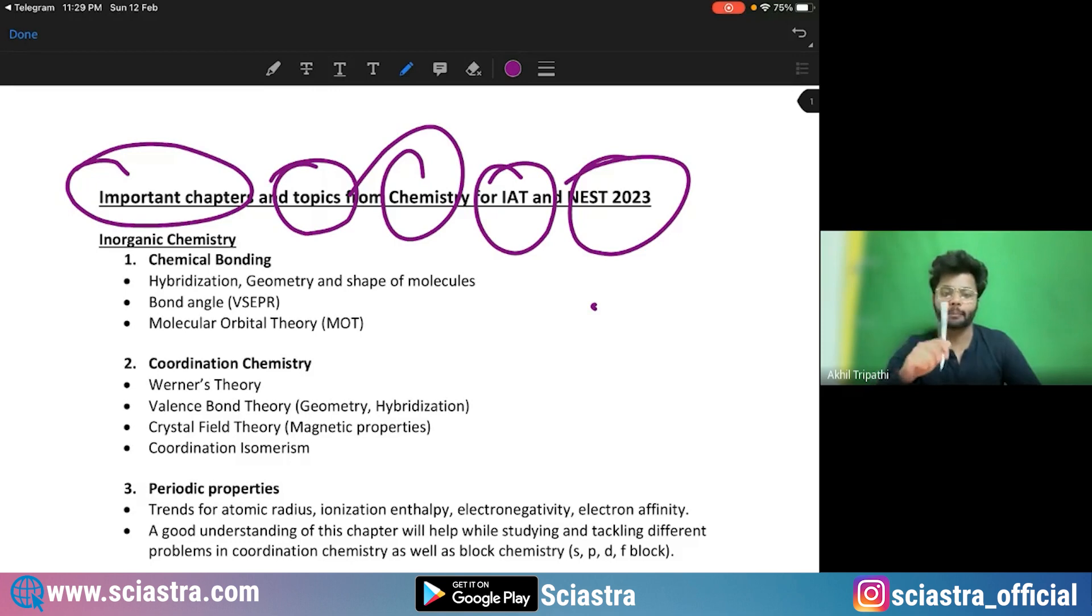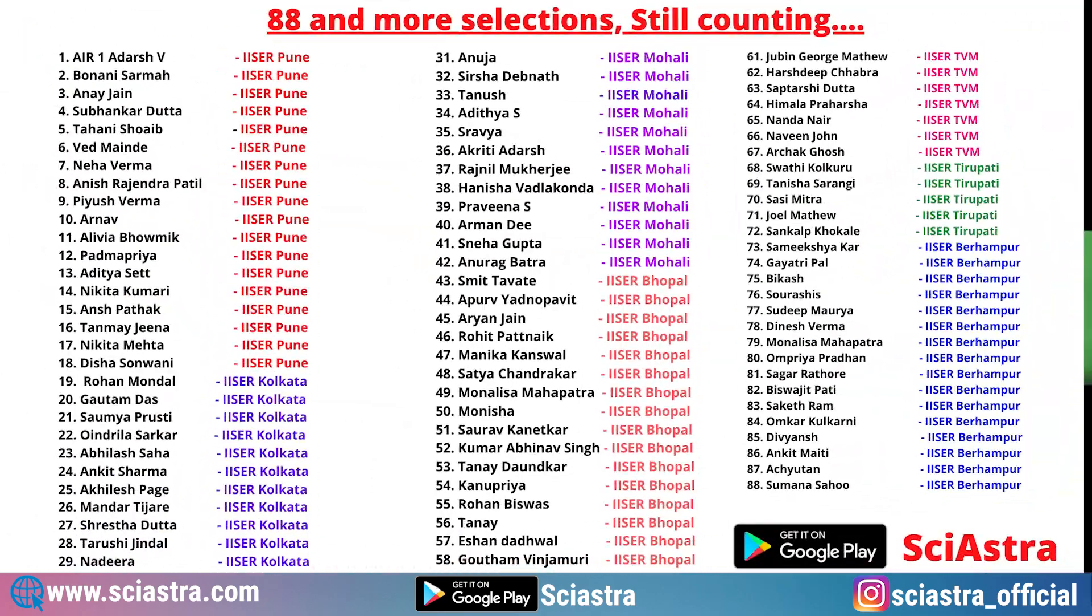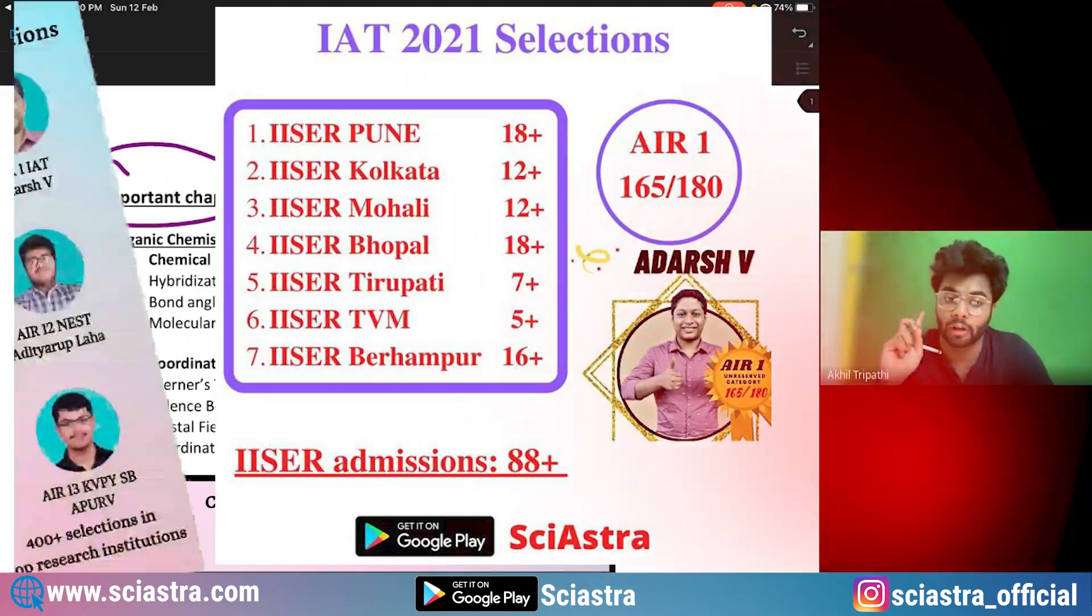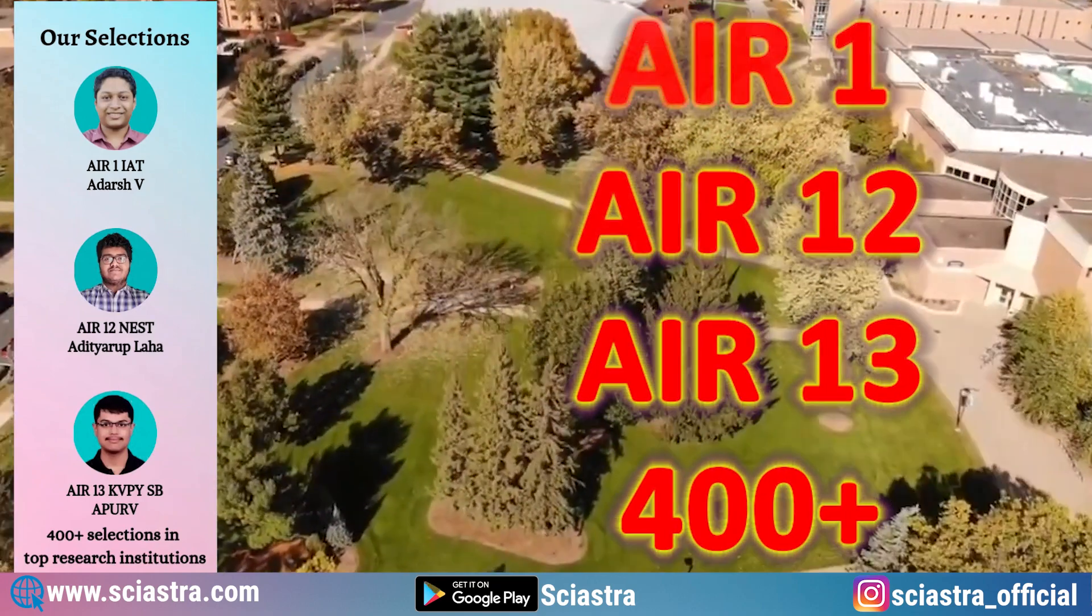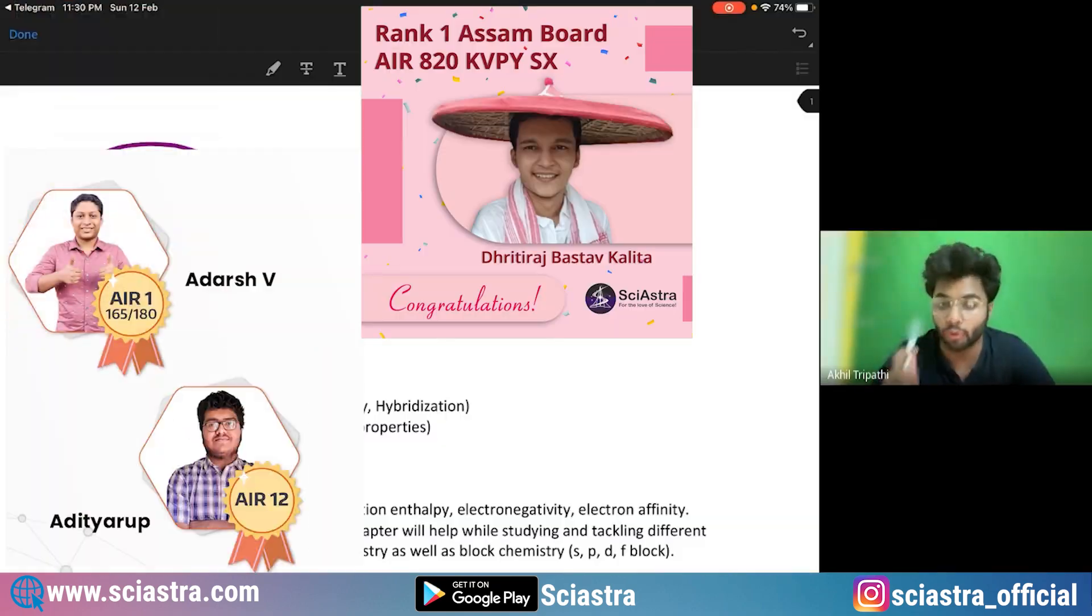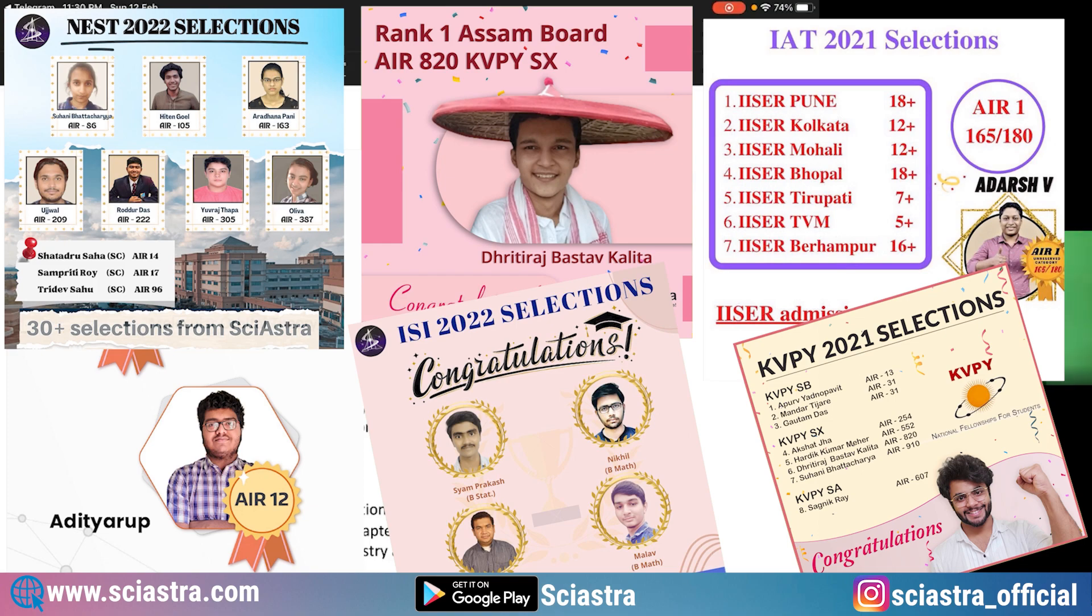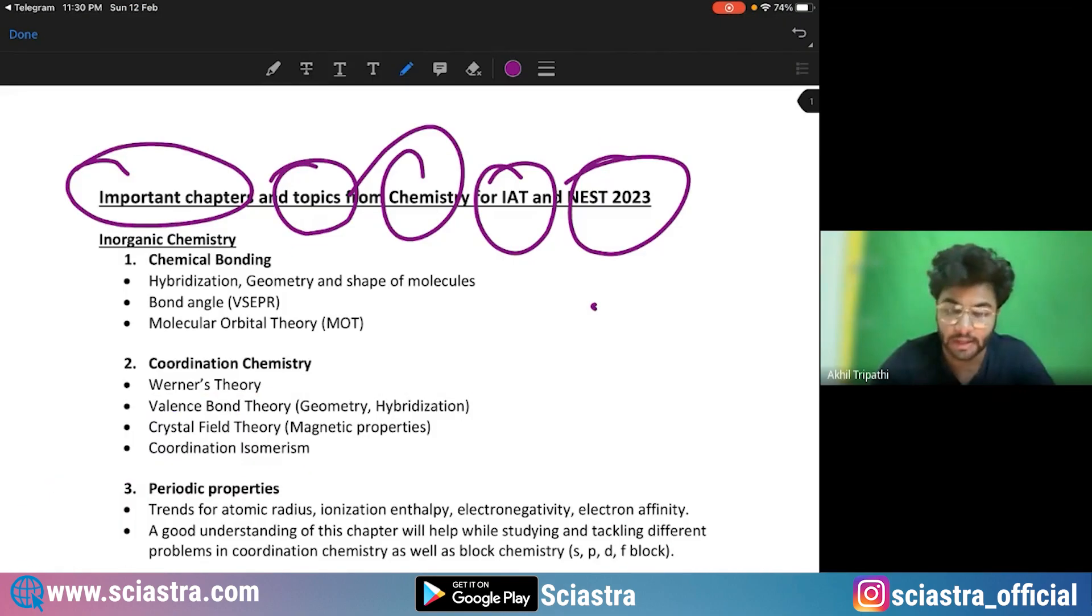I have also made analysis videos so please check those videos if you want to prepare for NEST or IAT 2023. We also have courses and have been guiding students from last two years. We have all India rank 1, all India rank 12, all India rank 13. We have more than 400 students, almost 200 students last year and 200 more students in 2021, in different top research institutes in India including all seven IISERs, NISERs, ISI, CMI etc.